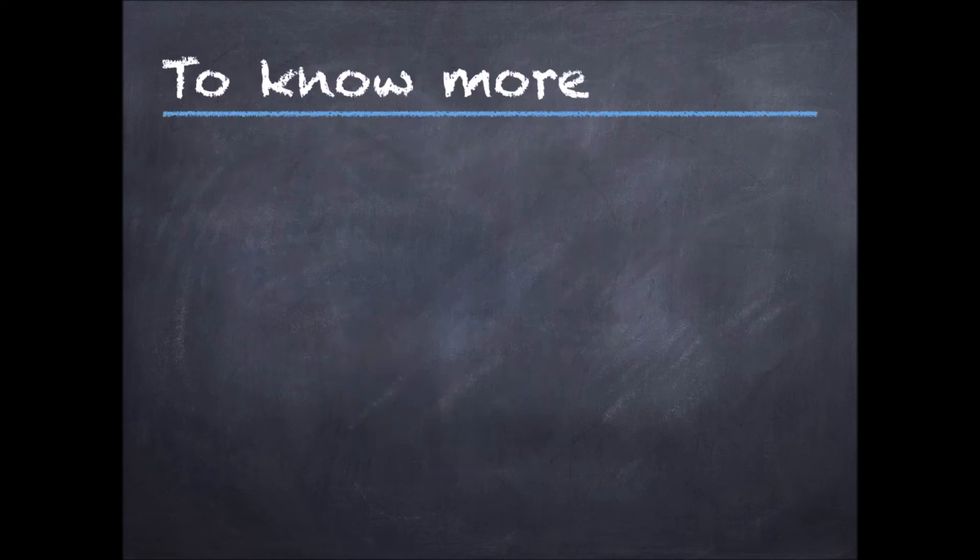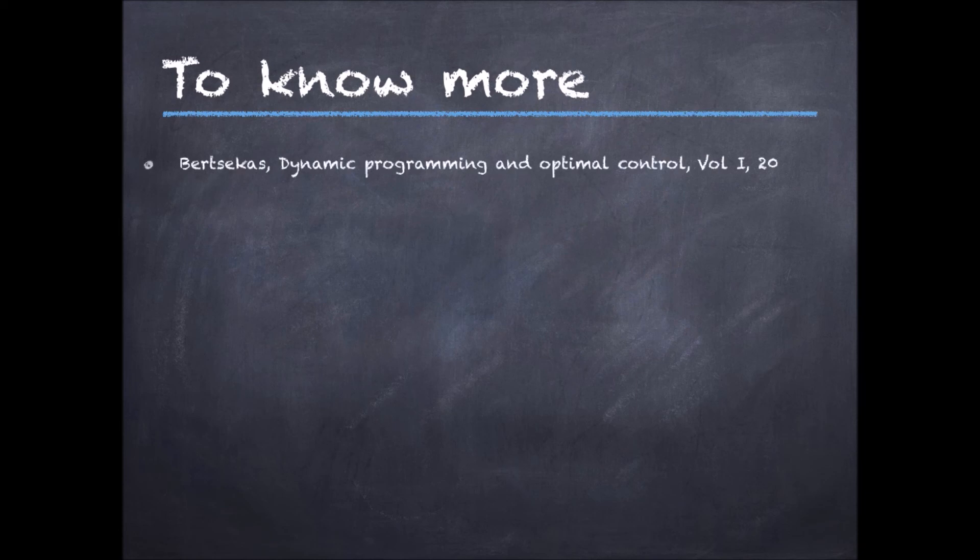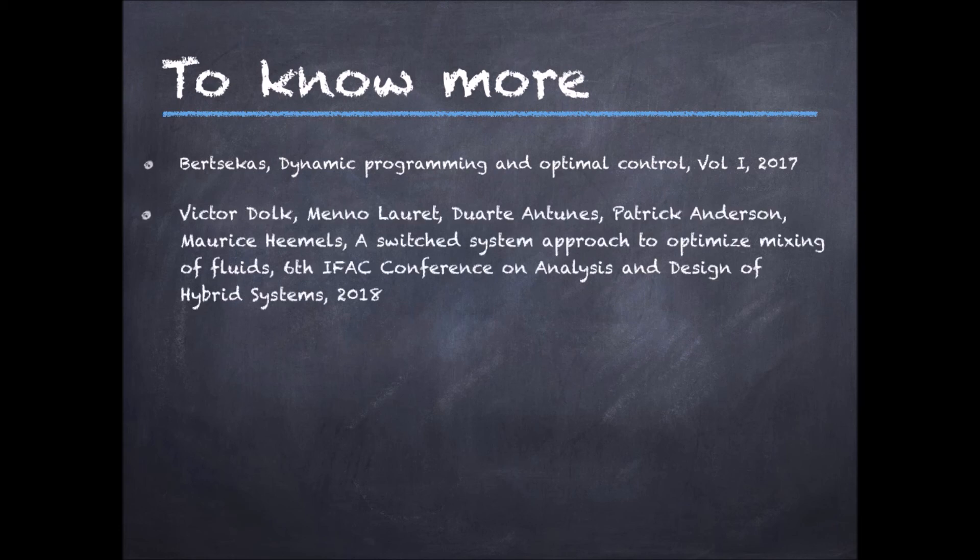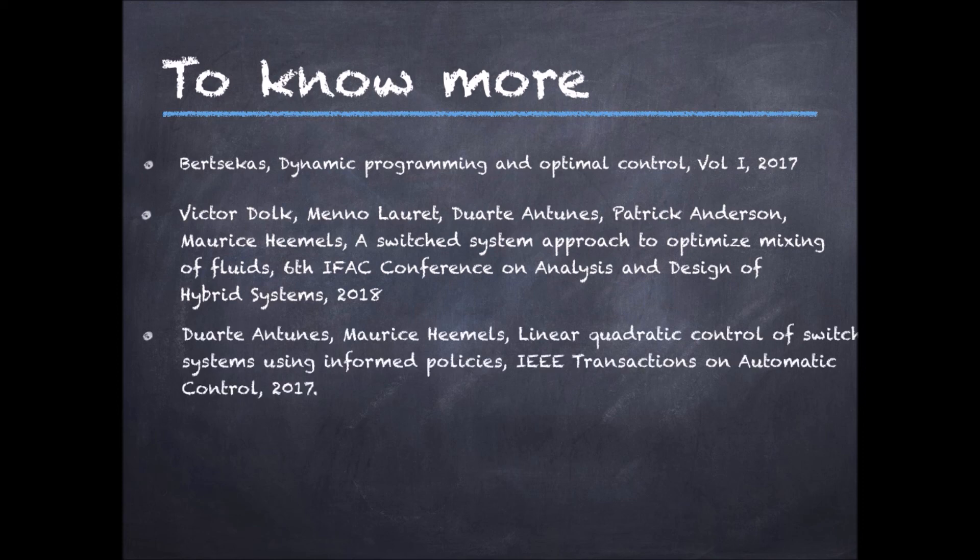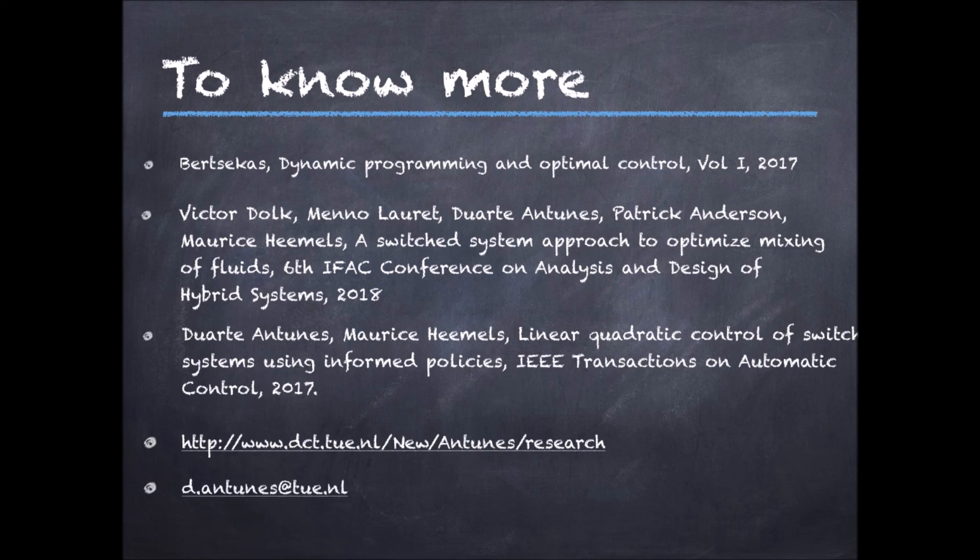If you want to know more about dynamic programming and approximate dynamic programming, I can refer to this excellent book by Bertsekas. You can find details about the mixing example I discussed in this paper and details on my research on quantifying the gaps between optimal approximate dynamic programming and based strategies in this other paper. You can download these papers and you can find out more about my research in the research section of my webpage. Moreover, feel free to send me an email if you have questions. Thank you very much for watching.